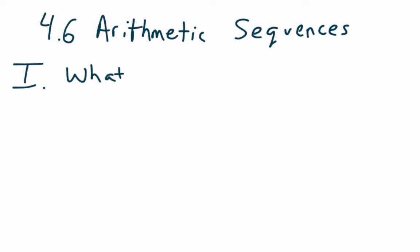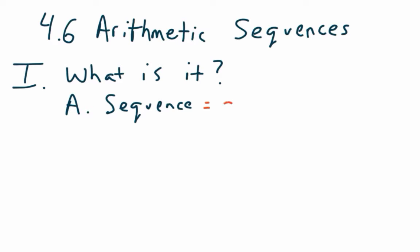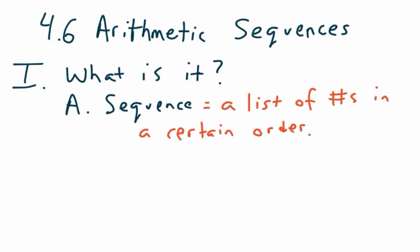I'm going to start just by saying: what is a sequence? A sequence is really just going to be a list of numbers in a certain order. So it's a list of numbers in a certain order, and sometimes there will be a nice rule that goes along with it.